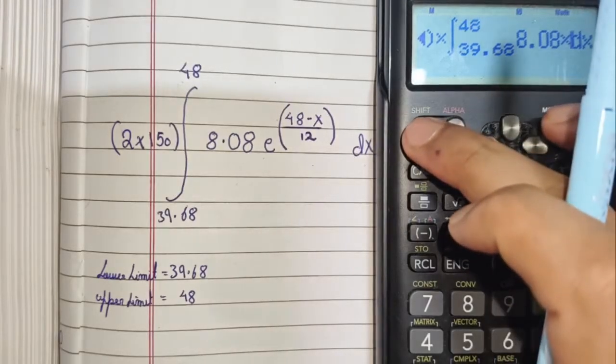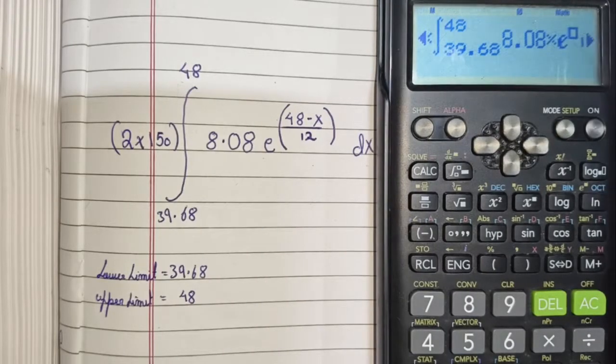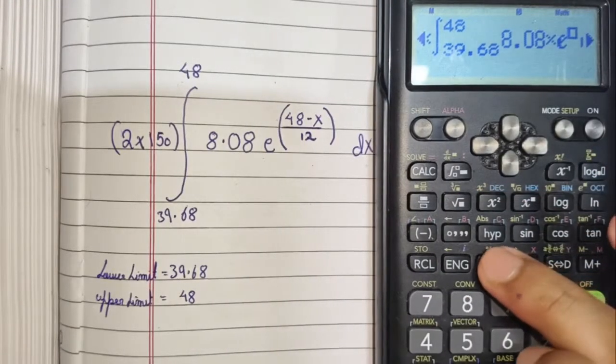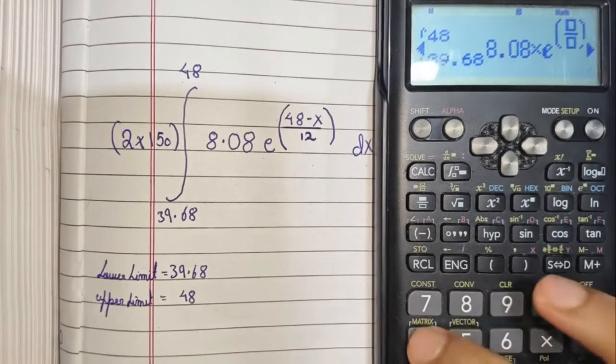e, if we press shift and then this key, we will get our e here, e to the power, let's add some brackets, to the power 48. Now, this is the most crucial part.